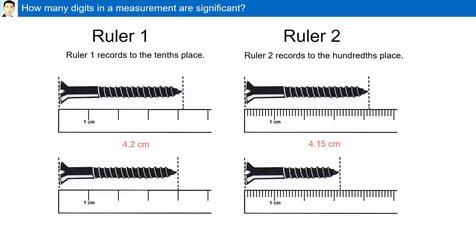The same ruler is used to measure two additional screws. Using ruler number 1, we see the screw is exactly at 4 centimeters. Since this ruler can measure to the tenths place, our answer is reported as 4.0 centimeters. Using ruler number 2, the screw is 3.2 centimeters exactly. This ruler measures to the hundredths place, so our answer is reported as 3.20 centimeters.